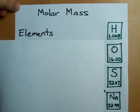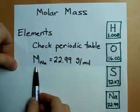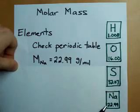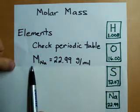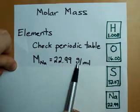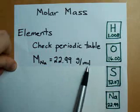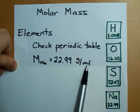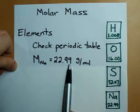For elements, it's really easy to calculate the molar mass. You just check the periodic table. For example, the molar mass of sodium, just look on the periodic table, and you'll see the atomic mass is 22.99. This means that the molar mass of sodium is 22.99 grams per mole. This unit of measure means that one mole of sodium atoms weighs 22.99 grams.